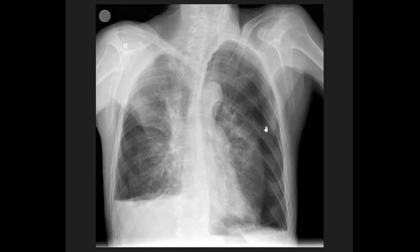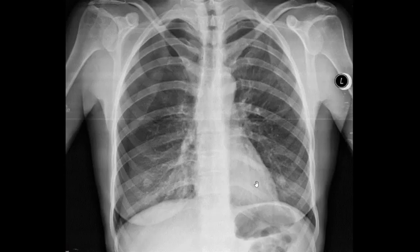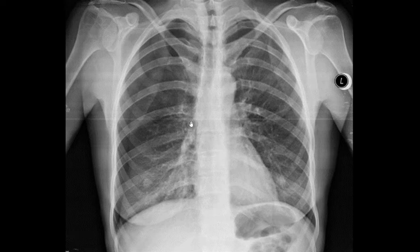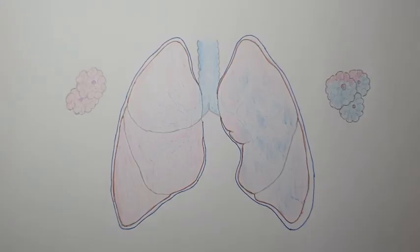In this case the hydropneumothorax is bilateral, present in both hemithoraxes. These three X-rays show a simple easy-to-identify pneumothorax, then more complicated cases. To become proficient, the basics must be laid out, and then quantity matters — looking at more and more normal and pathological X-rays allows the eye to accommodate and identification becomes easier.